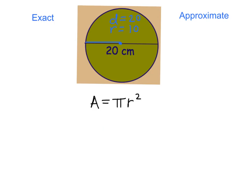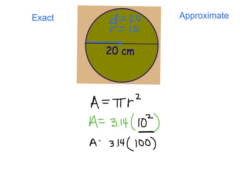Now let's come down to our formula and rewrite. I'm trying to find area, so A equals pi — that's 3.14 — times the radius squared. My radius is 10, so I do 10 squared. When you grab your calculator, follow the order of operations and do 10 squared first. You can type in 10 squared, or just 10 times 10, which is 100. Then multiply by pi, which is 3.14. So 100 times 3.14 gives me an area of 314 centimeters squared.